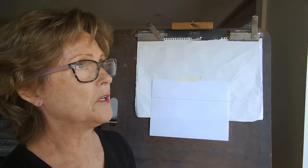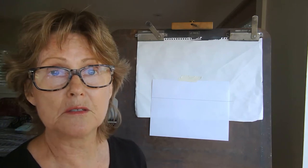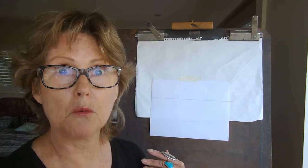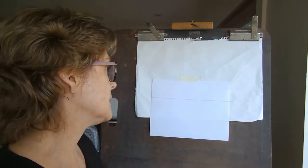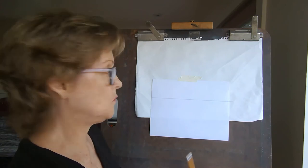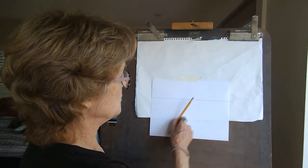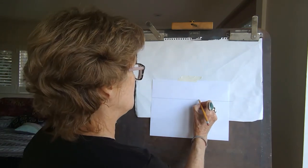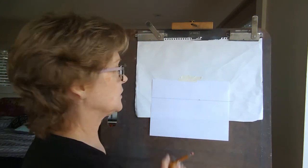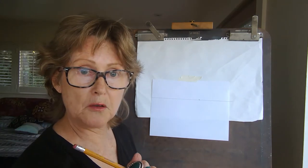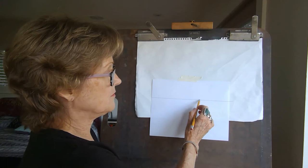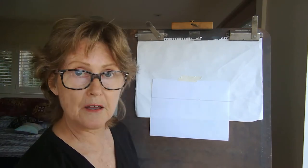The next thing we need to decide is something about that vanishing point. We need to just pick a vanishing point out on the horizon. I'm going to pick one right about here so that we can see things from more of an angle. So my vanishing point will be here — you pick one on the horizon line, somewhere off the middle, a little bit over to the side.